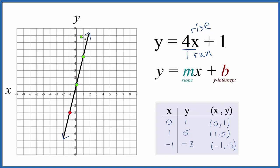Likewise, we could go in the opposite direction. We could go down 4 and over 1. And we could do it again, down 4 and over 1.